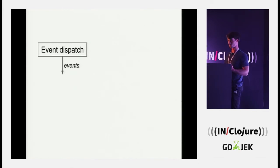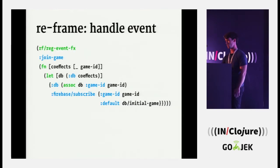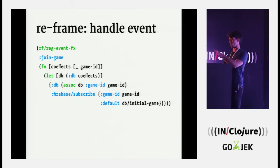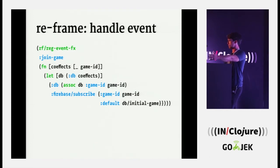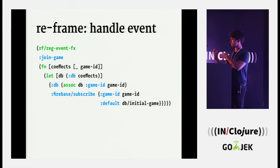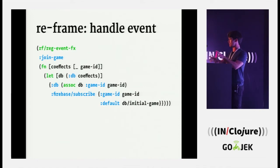Events come out of event dispatch, and now you need to do something with those events — that's the handle event part of the loop. You write event handlers. This is a somewhat complicated event handler using reg-event-fx, one of the lower-level event handlers. You give it the name — join-game — the type of events it will handle, and then a function. These functions take in data, do some work, and just return other data. There are no side effects, no mutation. Stuff comes in, stuff goes out.